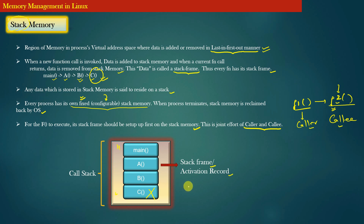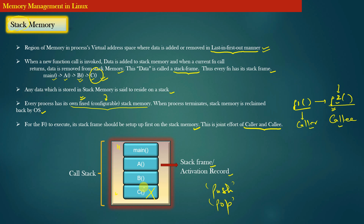Because stack memory is a stack, we use the terms associated with stack operations. Adding data to the stack memory means pushing data onto the stack, and removing data from the stack memory means popping data out. Stack frames are pushed into the stack when a function is invoked, and popped out of the stack when the function returns.